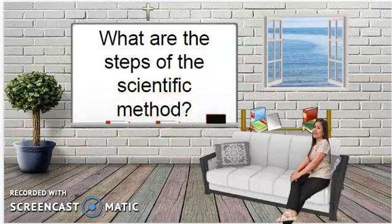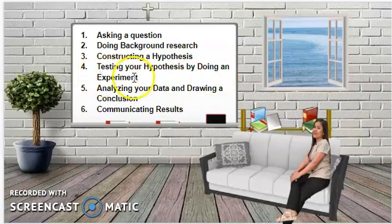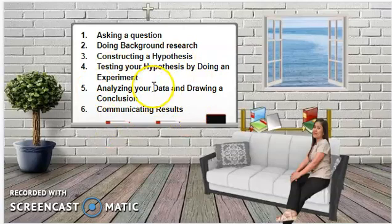What are the steps of the scientific method? There are usually six steps. First, asking a question. Second, doing background research. Third, constructing a hypothesis. Fourth, testing your hypothesis by doing an experiment. Fifth, analyzing your data and drawing a conclusion. Sixth, communicating results. Some books mention seven steps because they separate analyzing data and drawing a conclusion, but here I compressed the two.